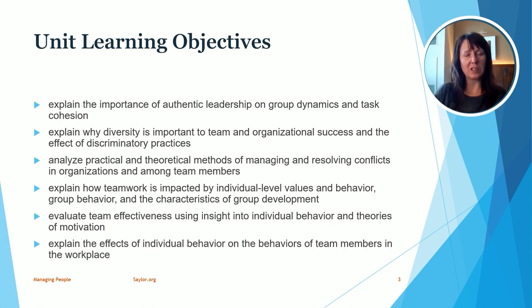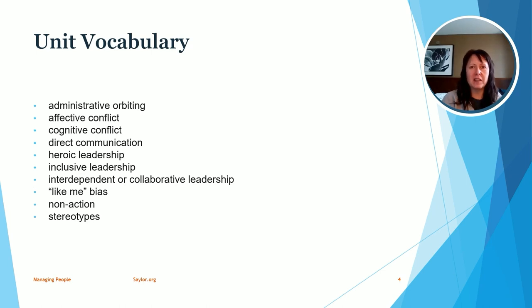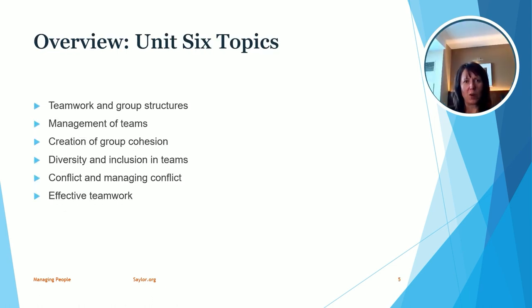Now that we've taken a look at the learning objectives, let's take a look at a list of topics that we've covered in this unit. Some of the topics we're going to look at in Unit 6 include teamwork and group structures. We're also going to take a look at effective management of teams, how we as leaders and managers can create group cohesion. We also will look at diversity and inclusion within teams, conflict and management of conflict particularly within teams, and some methods for effective teamwork.